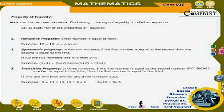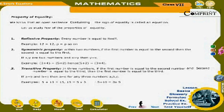3. Transitive property: In three numbers, if the first is equal to the second and the second is equal to the third, then the first is equal to the third. If a = b and b = c, then a = c for any three numbers a, b, c. For example, 5 + 10 = 15 and 15 = 5 × 3, therefore 5 + 10 = 3 × 5.